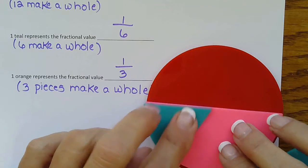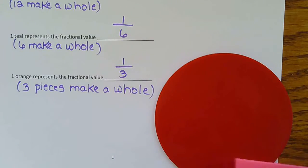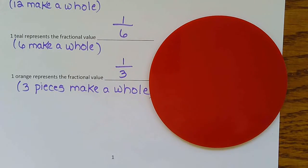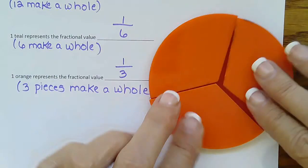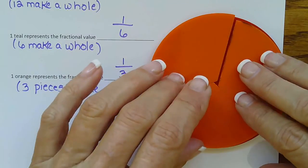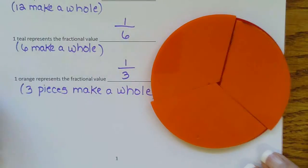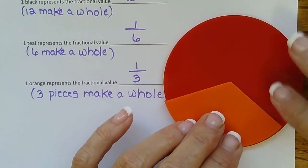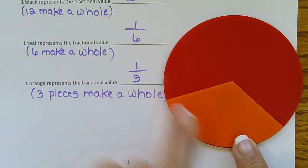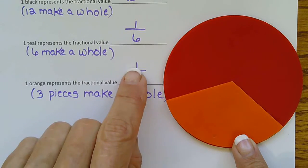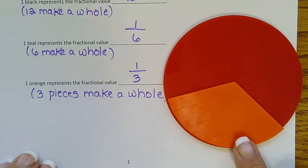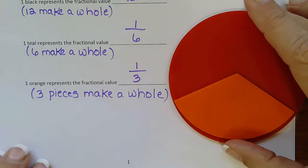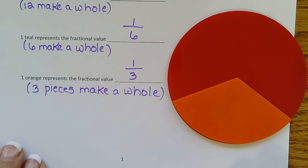And last but not least, we have orange. So orange, you can see three oranges make a whole. So if three oranges make a whole, what part of the circle is one orange? It would be one third. So three pieces make a whole, making one piece count as one third.